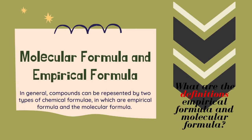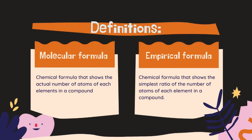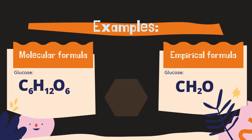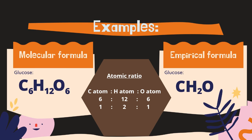Let's move on to the next topic: molecular formula and empirical formula. Compounds can be represented by different formulas — empirical formula and molecular formula. A molecular formula is a chemical formula that shows the actual numbers of atoms in every element, while an empirical formula is a chemical formula that shows the simplest ratio of the number of atoms in each element of a compound. Let's take glucose as an example. The molecular formula of glucose is C6H12O6, while the empirical formula is CH2O. This is due to the atomic ratio between carbon, hydrogen, and oxygen atoms. In the molecular formula, carbon is 6, hydrogen is 12, and oxygen is 6. If we divide all of these numbers by 6, we get the simple ratio of 1:2:1, giving the empirical formula CH2O for glucose.